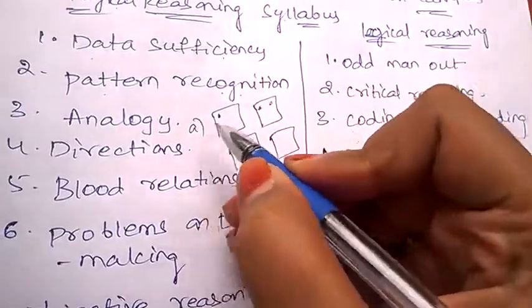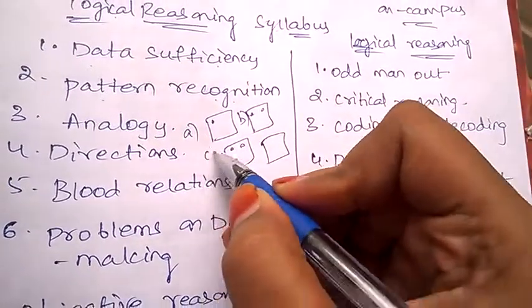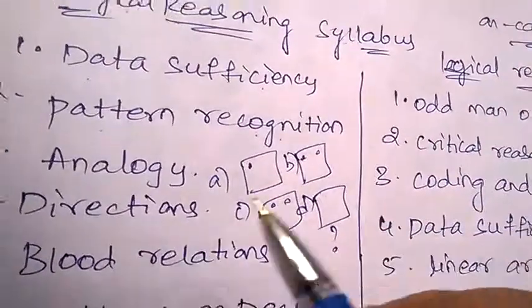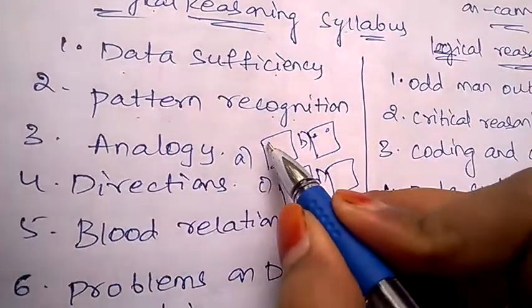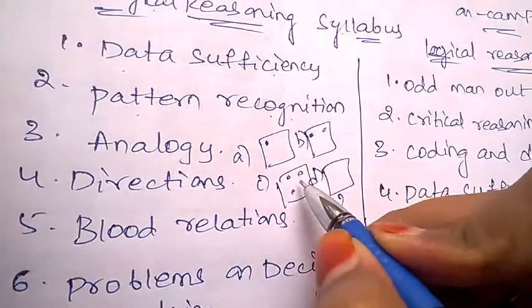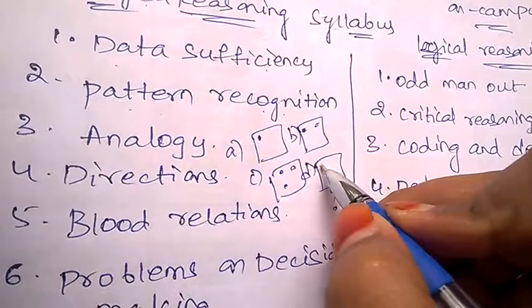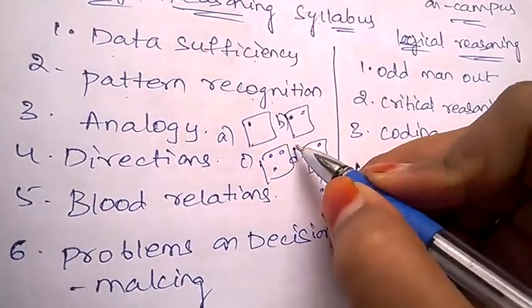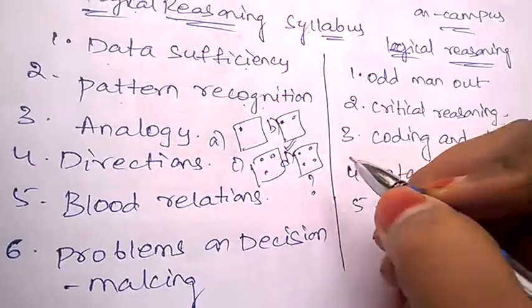This is pattern A, this is pattern B, this is pattern C. They'll be asking you what is pattern D. Just observe here: there's one dot here, there are two dots here, there are three dots. Automatically, in the coming pattern there will be four dots. You need to guess this. This comes under pattern recognition.